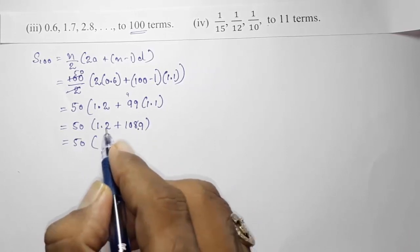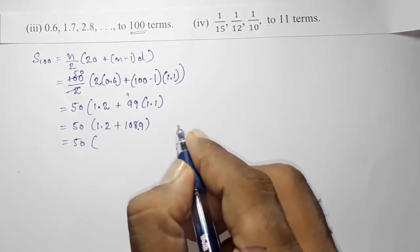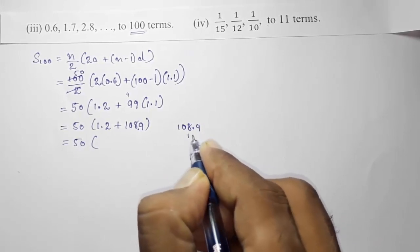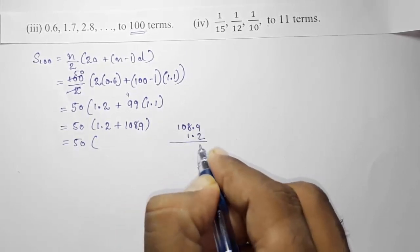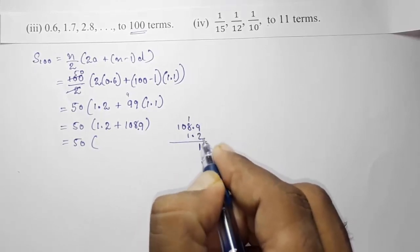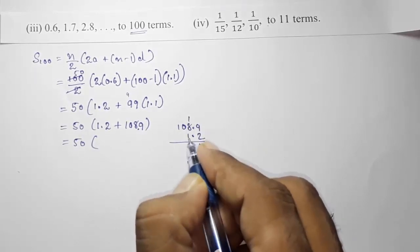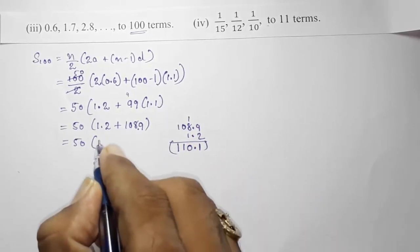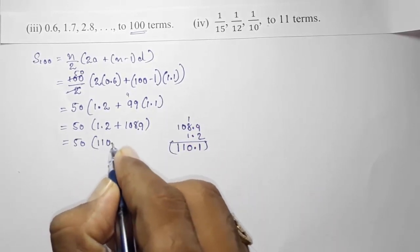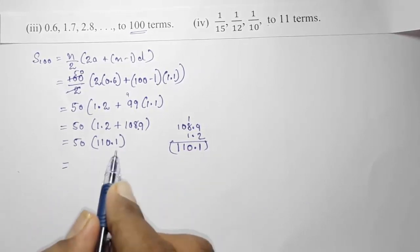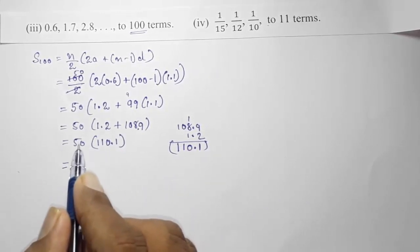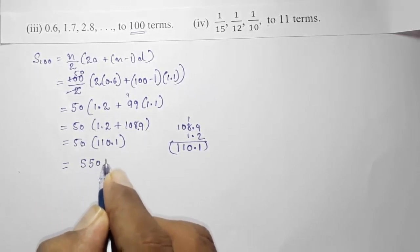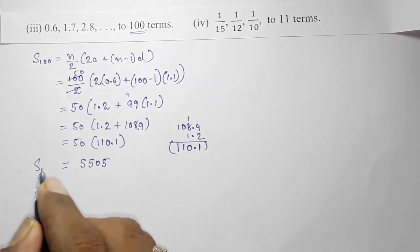Students often make errors adding decimals. Match the decimal points: 108.9 + 1.2 = 110.1. Now 50 × 110.1 — the decimal cancels with the zero — giving 5505. The sum of 100 terms is 5505.